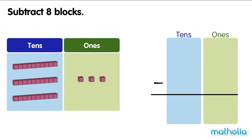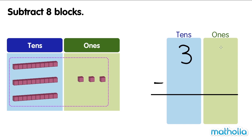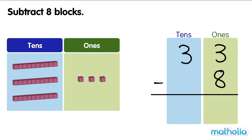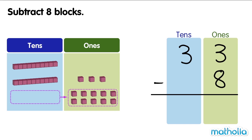Subtract eight blocks. There are 33 blocks. We need to subtract eight blocks. Let's start by subtracting the ones. There are three ones. We cannot subtract eight ones from three ones. So, we regroup one ten into ten ones.